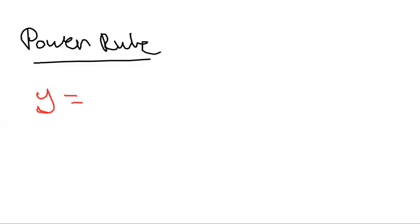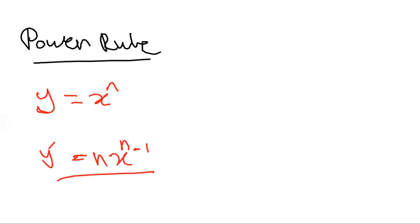Let's start with the power rule. If we have y equals x to the power n, where n could be any power, then the derivative would be n times x to the power n minus 1. So all we do is multiply the power by any coefficient we have, and then subtract 1 from the power in order to differentiate.